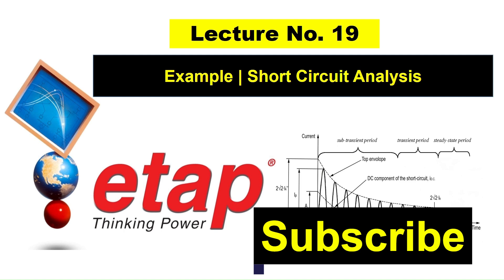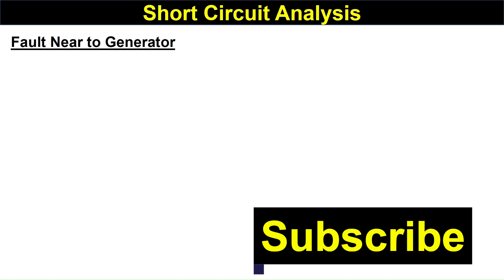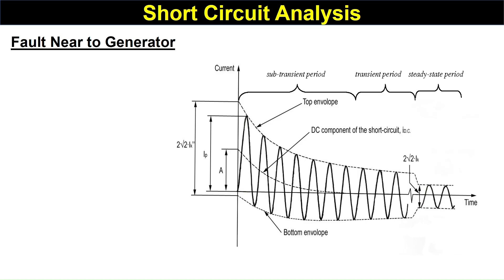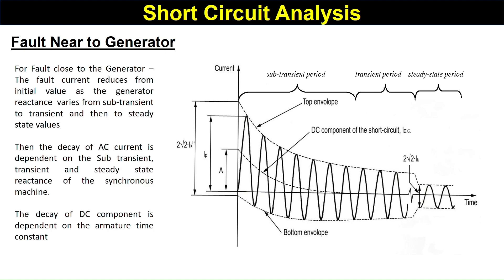First, you should know about fault current near to the generator. If the fault occurs near to the generator, the graph is asymmetrical because the fault current reduces from its initial value as the generator reactance varies from sub-transient to transient and then to steady state. There are three periods: the sub-transient period, the transit period, and the steady state period.